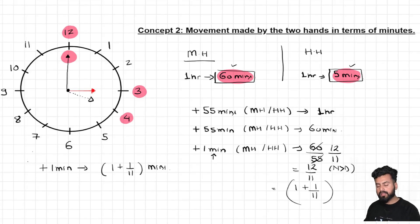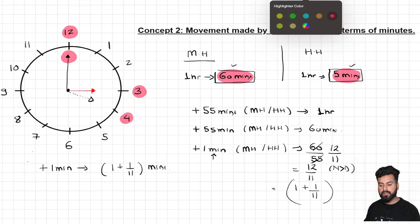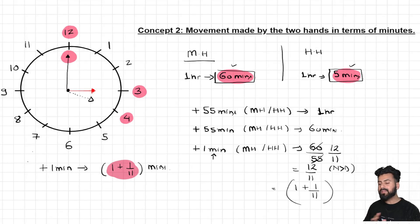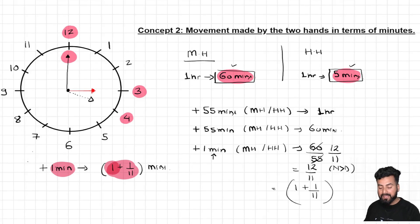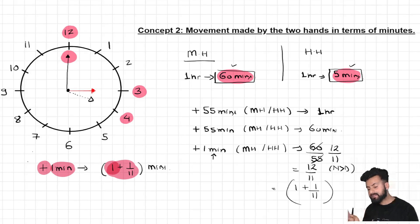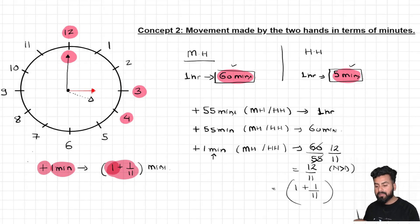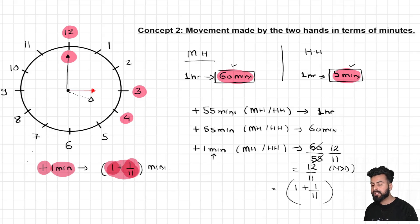For those confused about the logic behind 1 + 1/11: if the minute hand only needed to cover 1 minute of distance, it would take just 1 minute. But here, the minute hand must gain 1 minute extra over the hour hand. In the time the minute hand travels 1 minute, the hour hand also moves some amount. To compensate for that movement of the hour hand, the minute hand needs an extra 1/11 minutes. That is why gaining 1 minute takes not 1 minute, but 1 + 1/11 minutes.